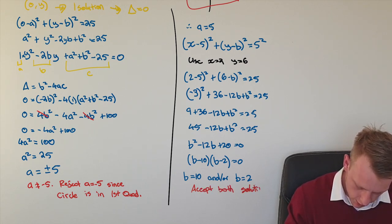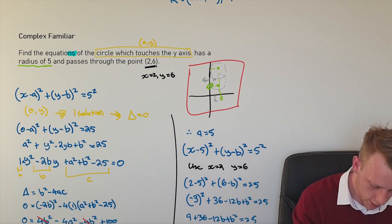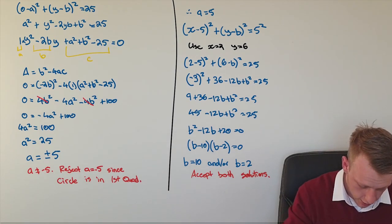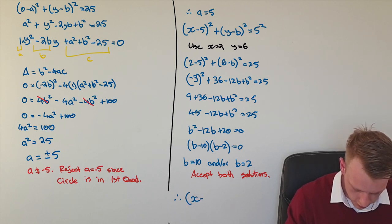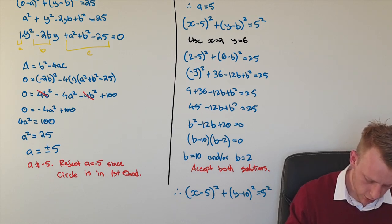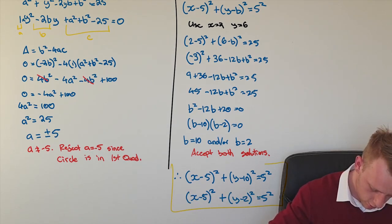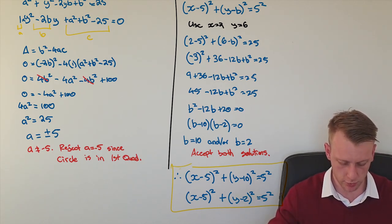And it also kind of emphasizes the fact that we needed to find the equations, not just the equation - we need to find the equations. So that means, therefore, we've got two equations. When we consider b being equal to 10, we get this. And when we consider b being equal to 2, we get this. So those are our - that's complex familiar.